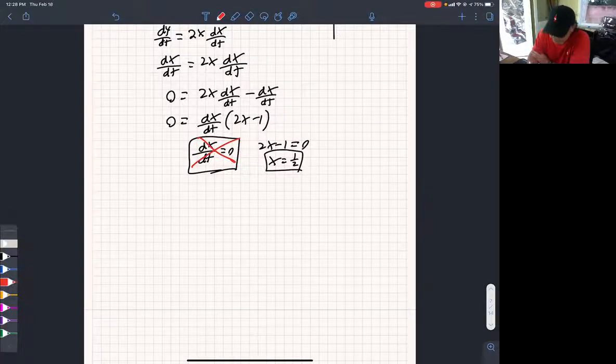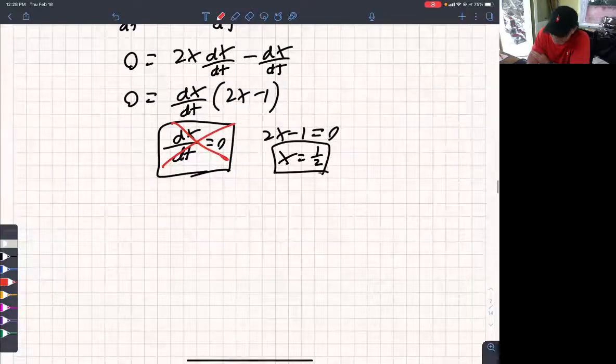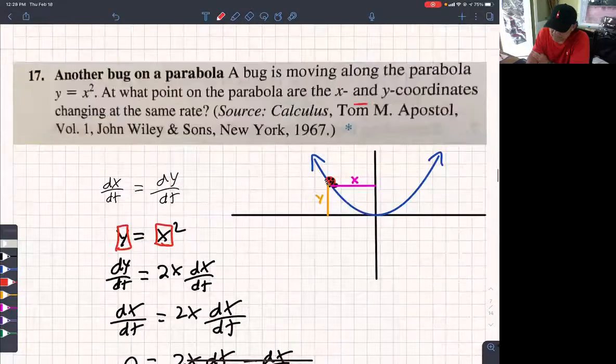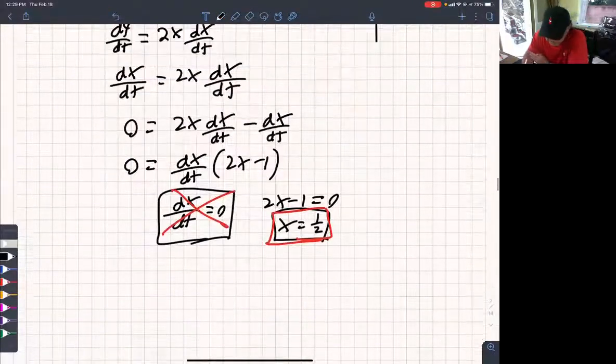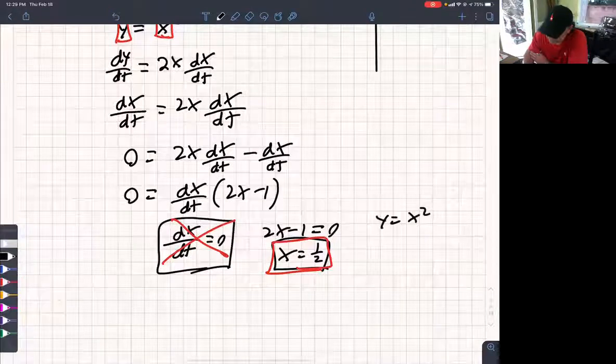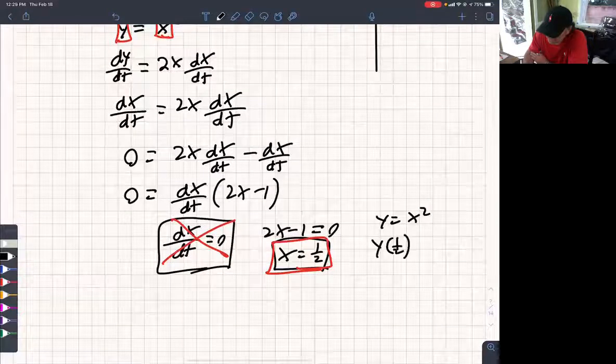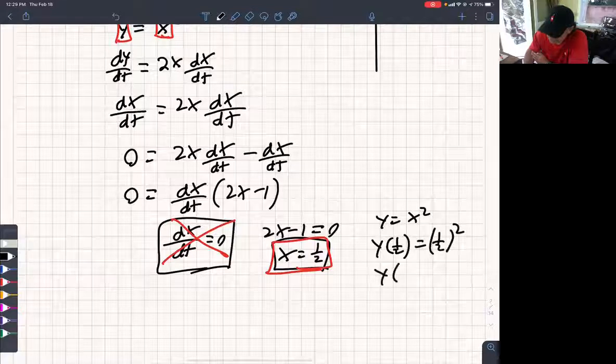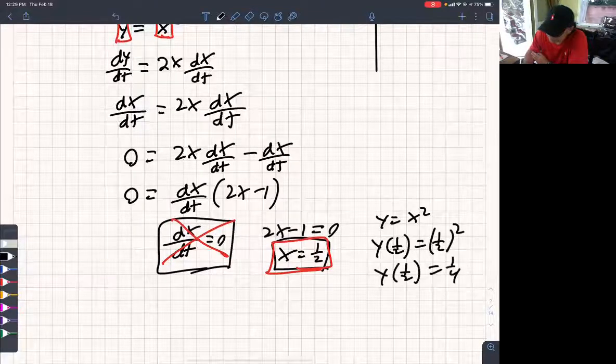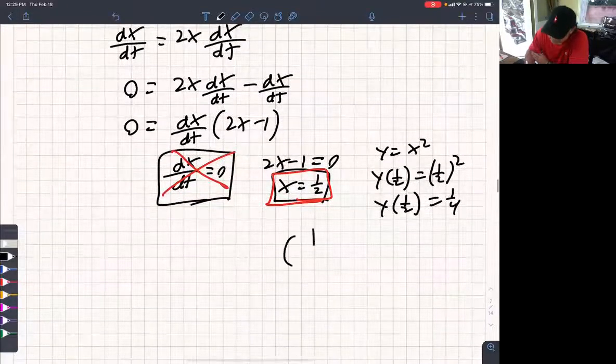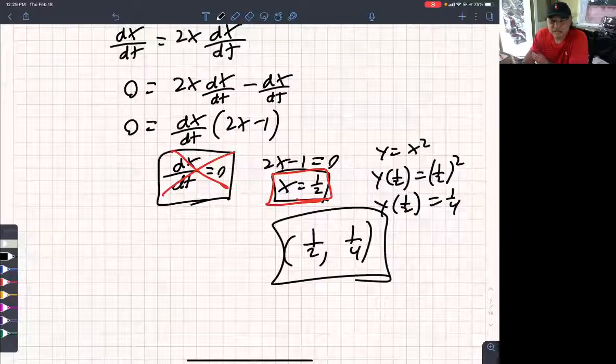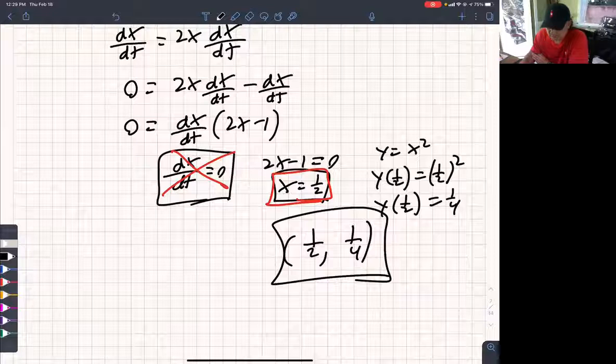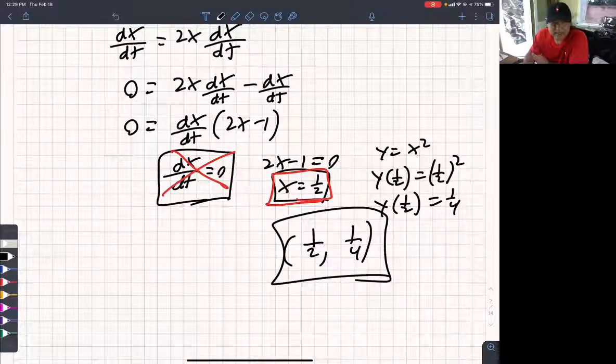So your only solution then is x is 1 half. That's not the answer. They want the x and y coordinates. But you know that y equals x squared. So y at 1 half is 1 half squared. So y at 1 half is 1 fourth. So our coordinates would be 1 half, 1 fourth.